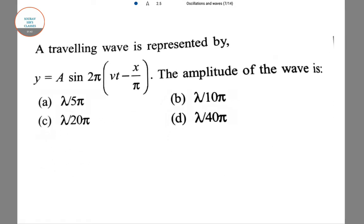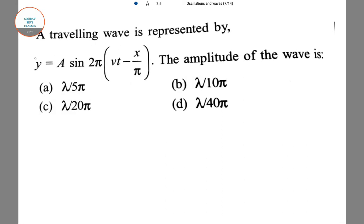Next, a traveling wave is represented by y = A sin(2πνt - x/π). For the amplitude of the wave, first we have to find the wave velocity and peak particle velocity.